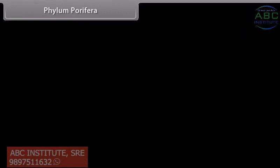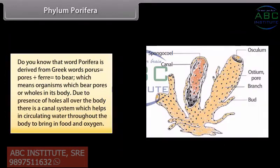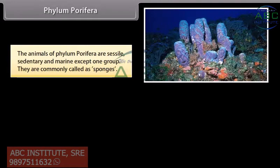Phylum Porifera. The word porifera is derived from Greek words 'porous' meaning pores, plus 'ferre' meaning to bear, which means organisms which bear pores or holes in their body. Due to the presence of holes all over the body, there is a canal system which helps in circulating water throughout the body to bring in food and oxygen. The animals are sessile, sedentary and marine except one group, and are commonly called sponges.